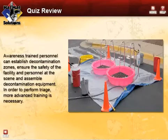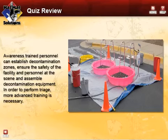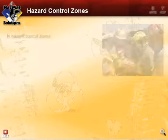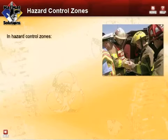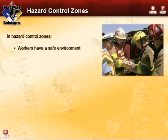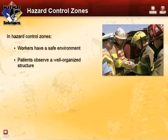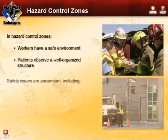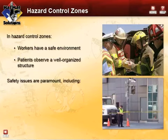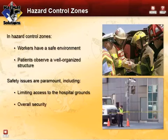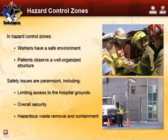Awareness-trained personnel can establish decontamination zones, ensure the safety of the facility and personnel on the scene, and assemble decontamination equipment. In order to perform triage, more advanced training is necessary. The decontamination plan should clearly identify the hazard control zones so that workers have a safe work environment and patients observe a clearly defined, well-organized structure for addressing their injuries. Safety is paramount — all of this can be achieved by limiting access to the hospital grounds and having an overall security plan for the entire hospital and for the removal of hazardous waste from the premises.